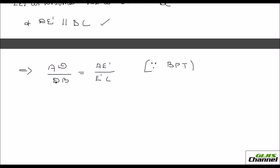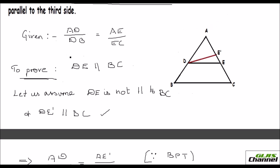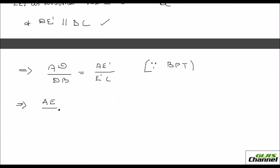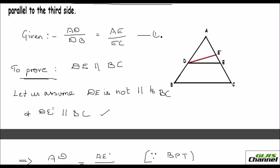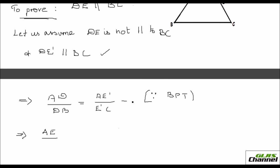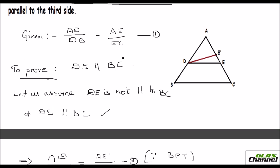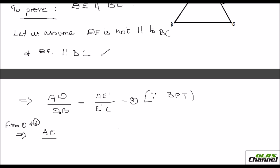Since we have AD over DB equals AE dash over E dash C (equation 2), and it was already given that AD over DB equals AE over EC (equation 1), from equations 1 and 2 we get: AE over EC equals AE dash over E dash C.